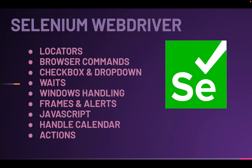Next, Selenium WebDriver — why WebDriver? WebDriver is the world's largest automation testing tool because it's open source, simple to install, simple to handle, and supports various operating systems such as Linux, Windows, and Mac. It supports various languages such as Java, Python, JavaScript, and .NET. We are going to study locators, how to locate a web element, browser navigation commands, checkboxes, dropdowns, waits for page or element load, switching between pages and tabs, handling alerts, pop-up windows, and frames.